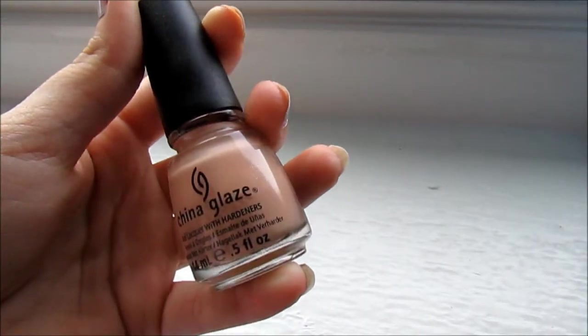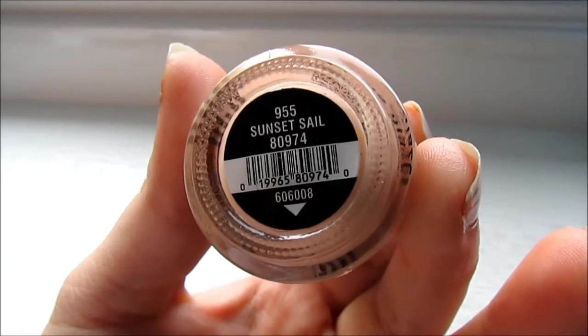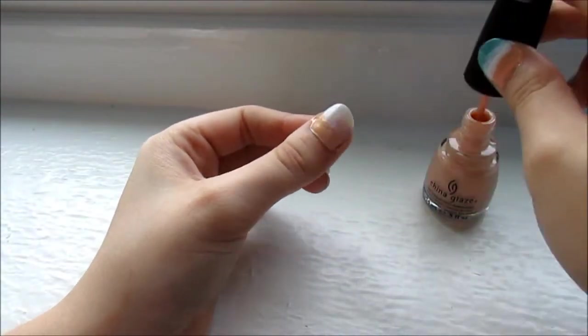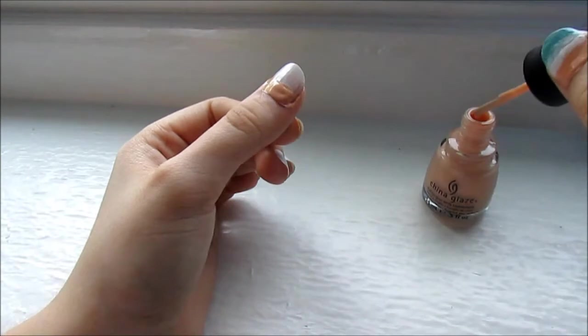Next grab your brown nail polish. I am using Sunset Sail by China Glaze. Paint this on the bottom half of your nails. This will represent the sand for our beachy nails.